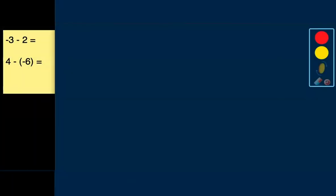Okay, let's use our two-color counters to help us subtract integers. The first problem we're going to solve is this one here, negative 3 minus 2. So we'll start with the first integer. We have negative 3. We're going to use the red counters to represent negative integers. So we'll pull out 3 for that negative 3: one, two, three.